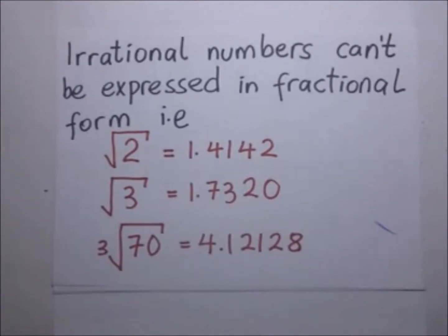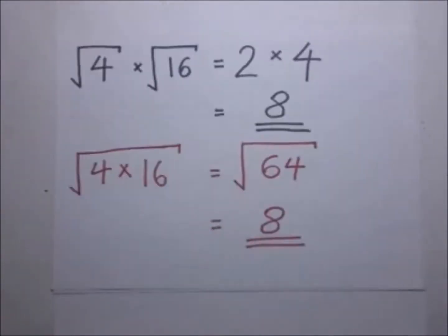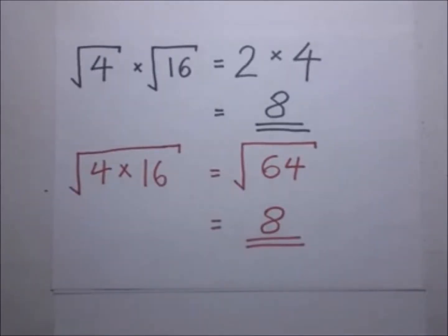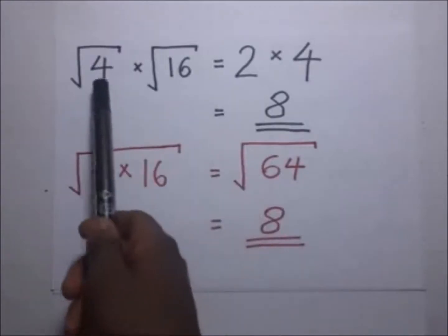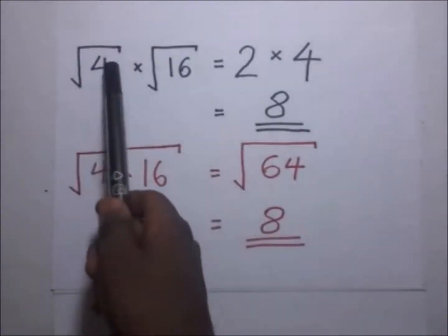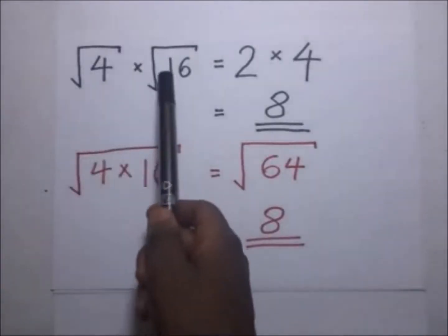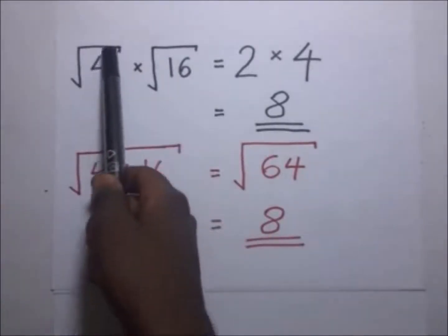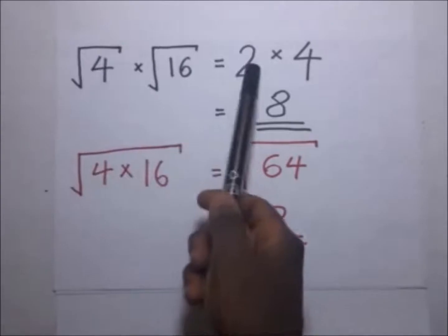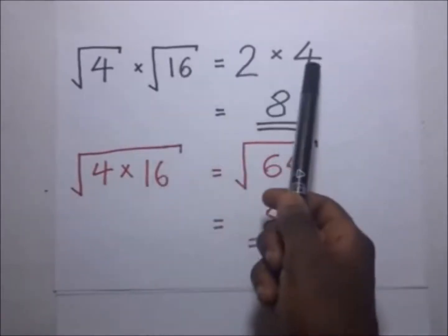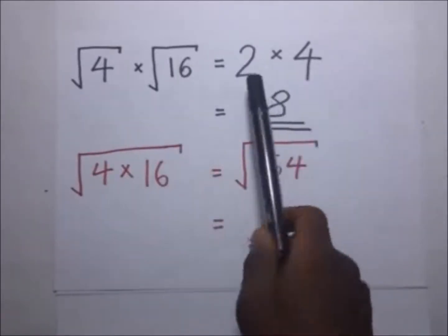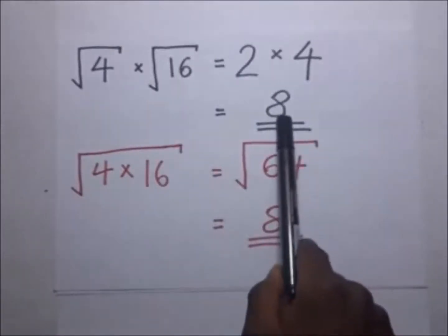We are going to look at how we simplify surds. In simplifying surds, we need to know some background knowledge. The square root of 4 multiplied by the square root of 16: we know the square root of 4 is 2, and the square root of 16 is 4, so 2 times 4 gives us 8.